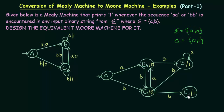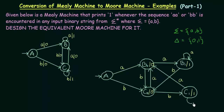For state C1, we use state C from the Mealy machine. On getting input small a, C goes to B with output 0, so C1 goes to B0. On getting input small b, C stays in C with output 1, so C1 goes to C1 itself. Output 1 is already associated to C1, so this is valid.